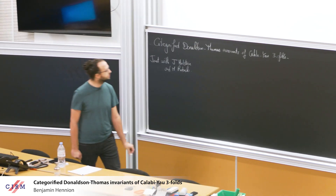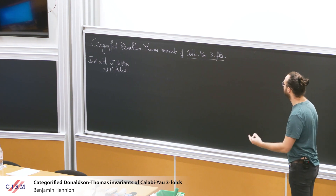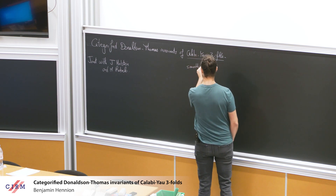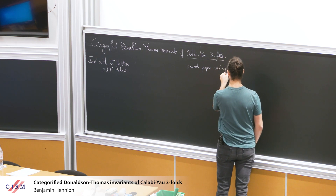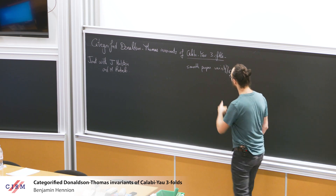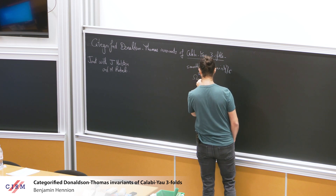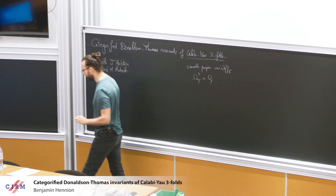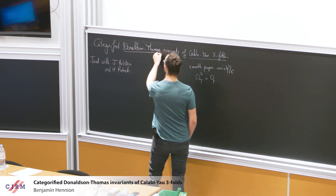Let's just start with fixing your minds on things. By this it's going to be a smooth and proper variety of dimension 3 over C, and maybe call it Y. Calabi-Yau means that it's oriented, so you have a trivialization of the canonical bundle. And so we'll see where this comes into play in five minutes or so. And what are Donaldson-Thomas invariants?